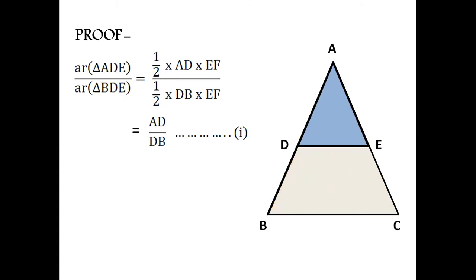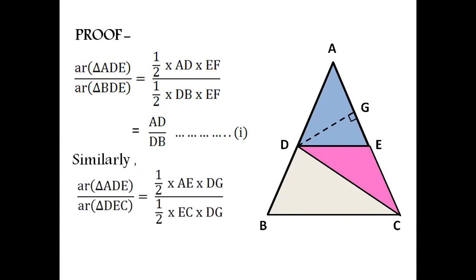Now let us see other side triangles, triangle ADE again in blue and triangle DEC in pink. We have DG perpendicular to AC. Similarly, we can write area of triangle ADE by area of triangle DEC is equal to half AE into DG divided by half EC into DG. After simplification we get AE by EC. Name it as equation 2.